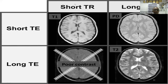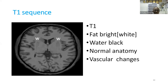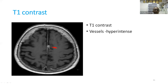Short TE and short TR gives T1; short TE and long TR gives T2. T1 is the main sequence for studying brain anatomy. In T1, fat is bright, water is black — white matter looks white inside, gray matter outside. If you give contrast, vascular components and other parts enhance and look hyper-intense.